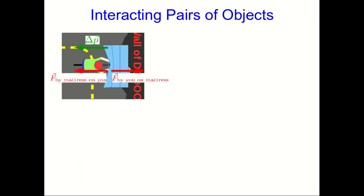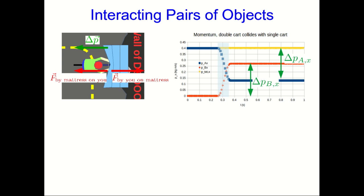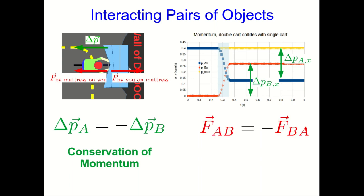We've seen that forces arise from interactions between pairs of objects, and so as a result, all forces exist in pairs, which we call interaction pairs. And because momentum is conserved, so that the change of momentum of one object is always of the same magnitude and in the opposite direction as the change of momentum of the other object, we know that the two forces in an interaction pair always act in different directions and have the same magnitude.